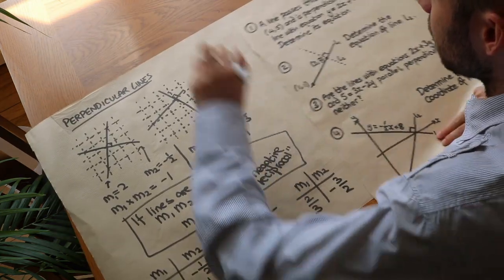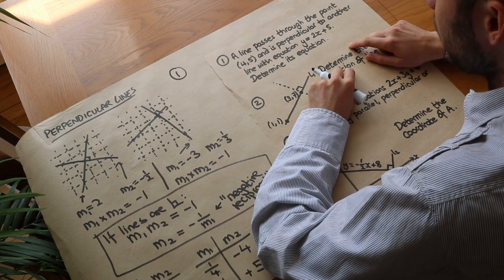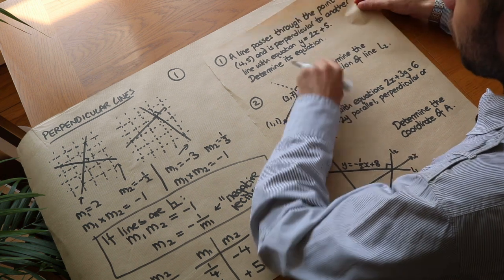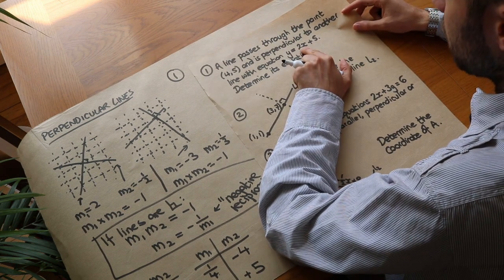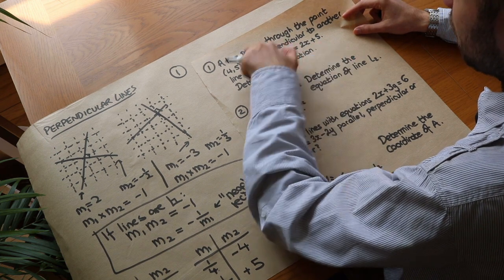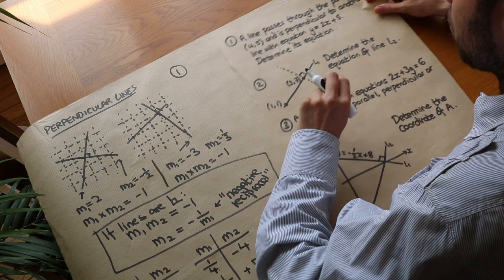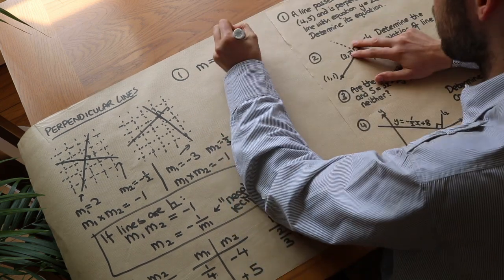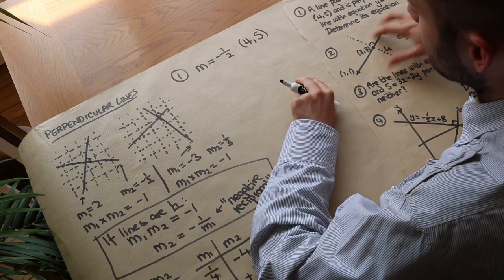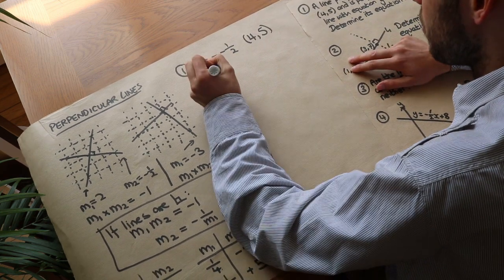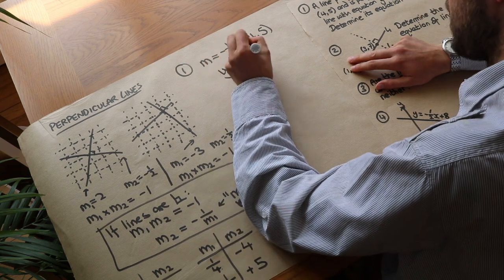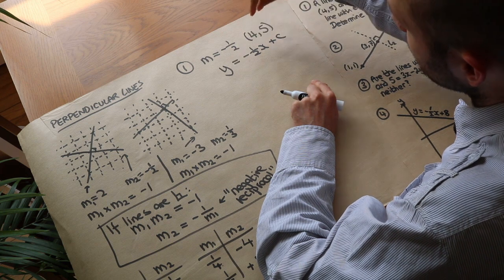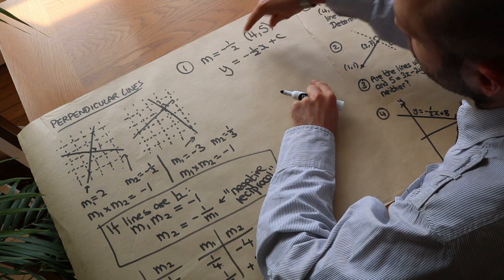Let's use this theory to solve some problems. A line passes through the point (4, 5) and is perpendicular to another line with equation y equals 2x plus 5. Determine its equation. The gradient of the other line is the coefficient of x, which is 2. So the gradient of our line is the negative reciprocal of that, which is minus a half. We have m = minus a half and the line passes through (4, 5). We write y equals mx plus c — we know m but not c. Because this point lies on the line, it must satisfy the equation, so we substitute x = 4 and y = 5.